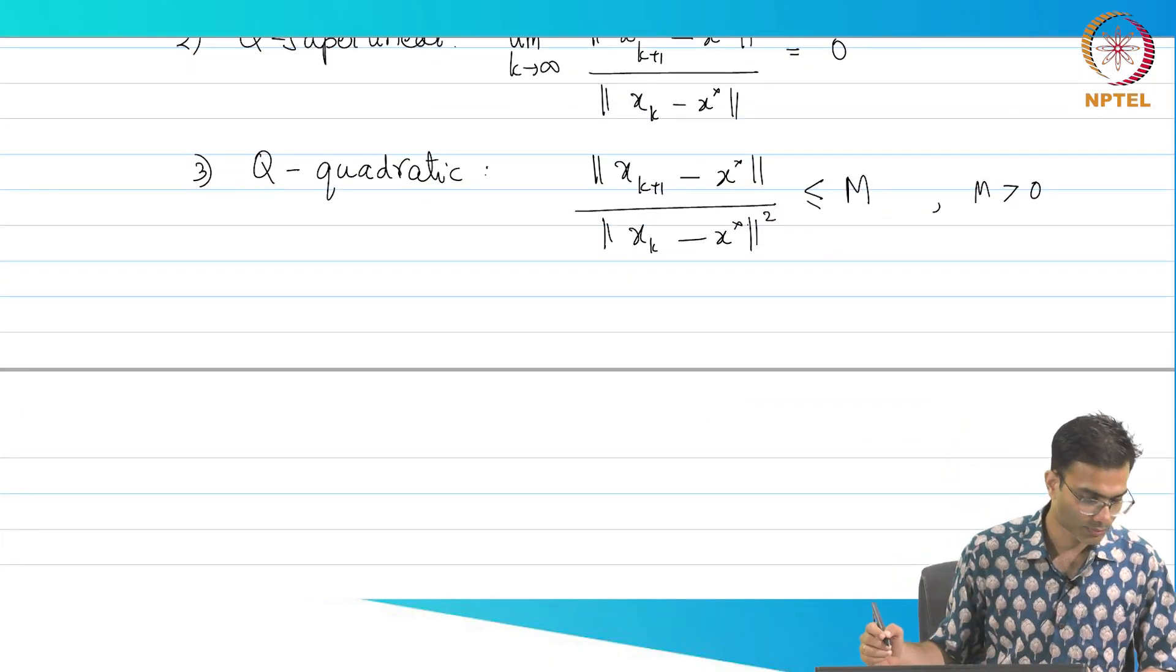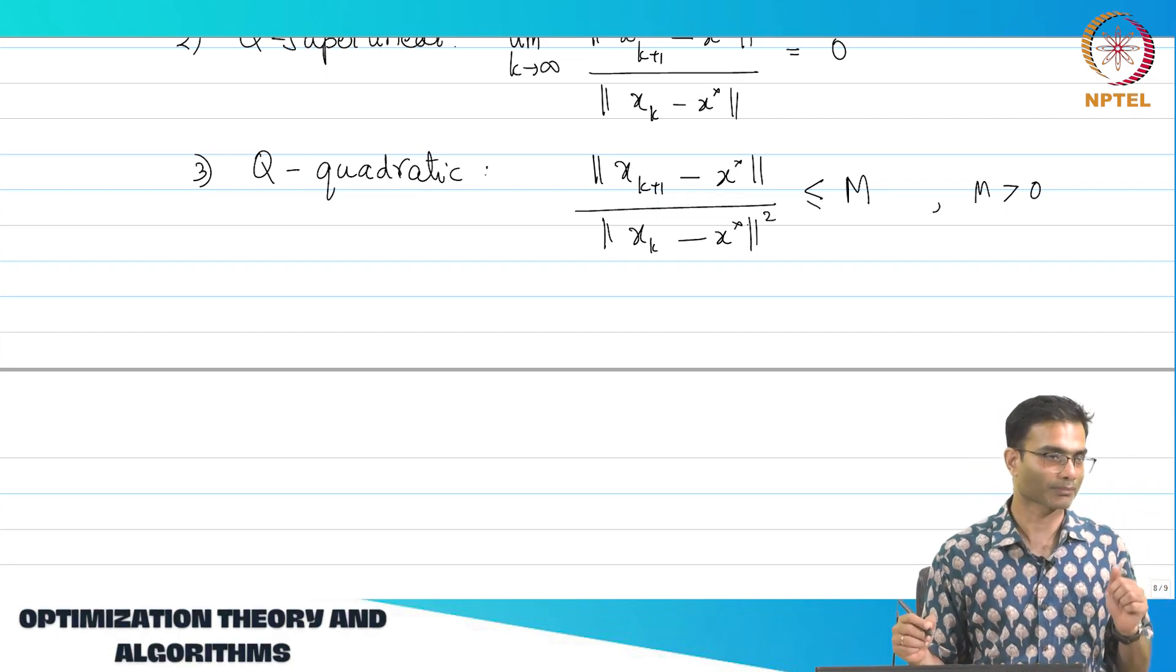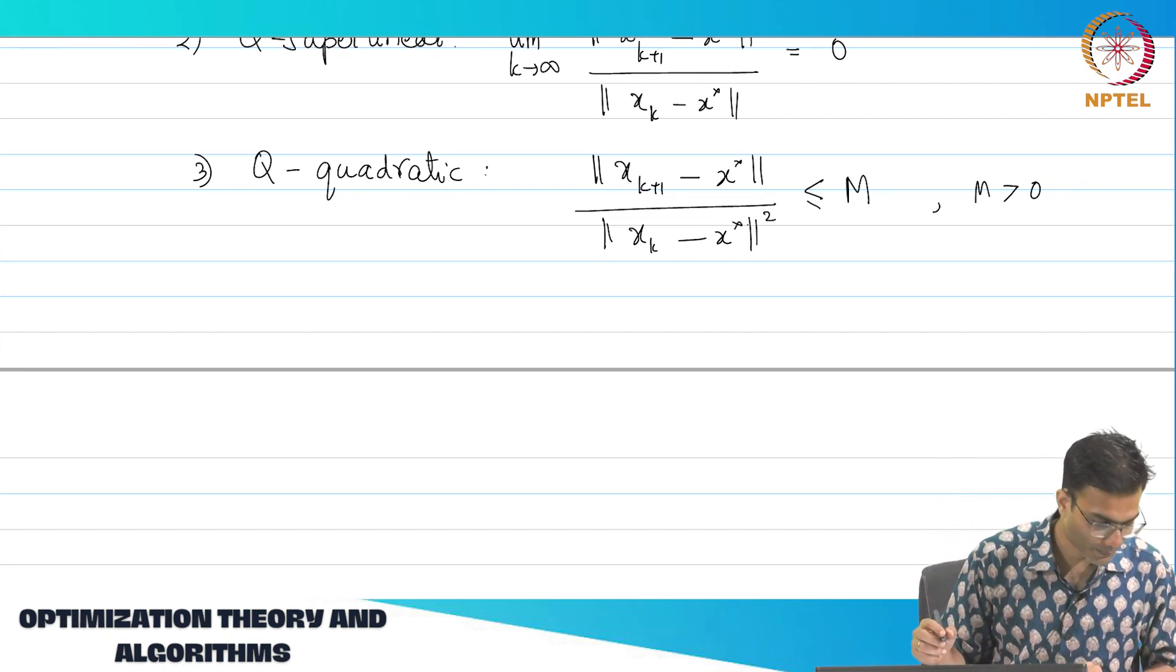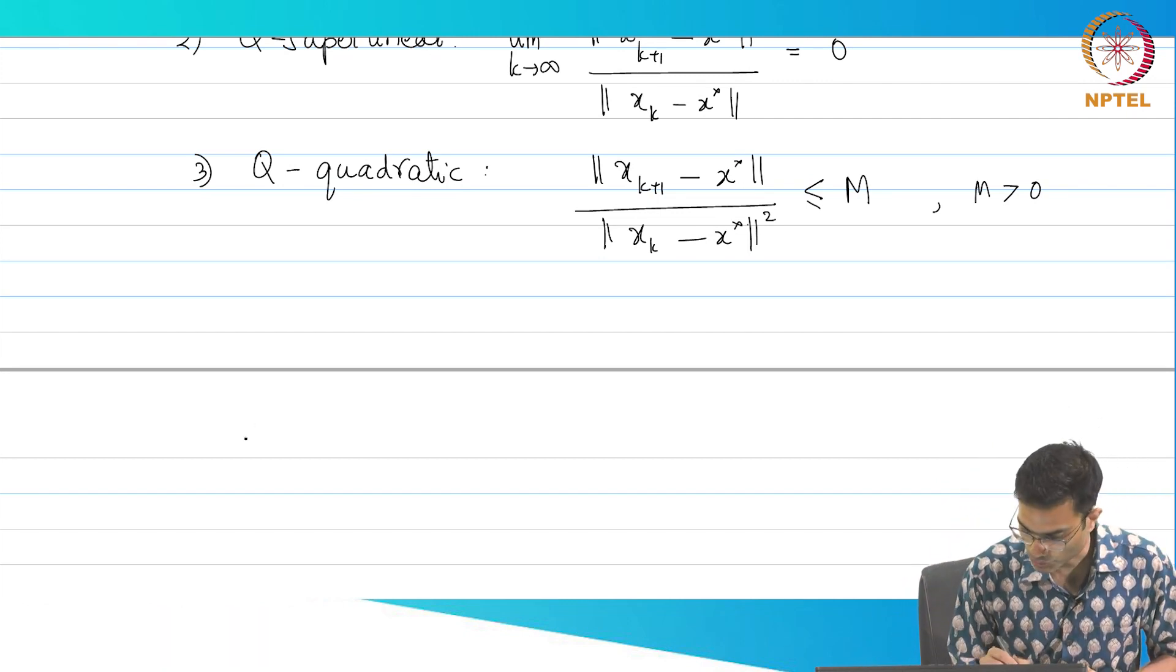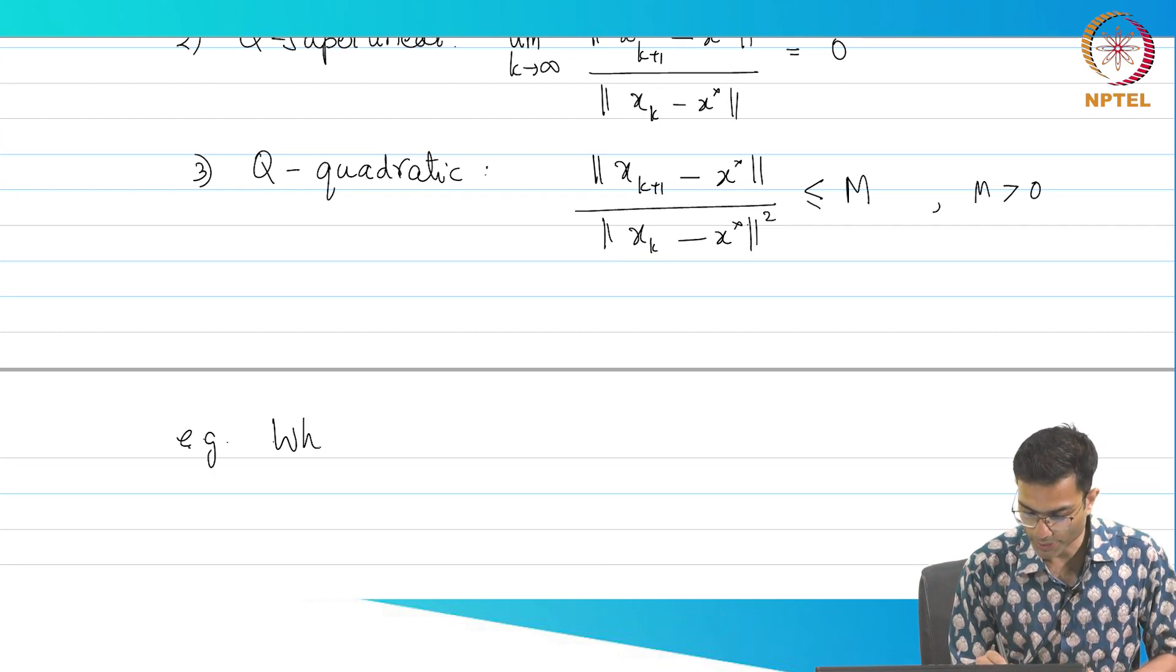Again, this will sound a little abstract, so we will just take one numerical example, not numerical, one example to understand this better. So, example, what is the rate of convergence?